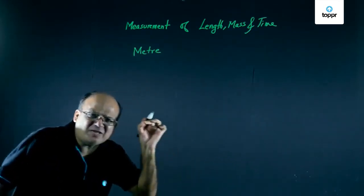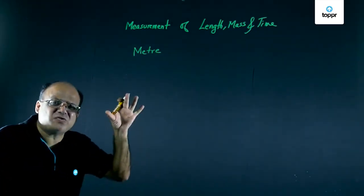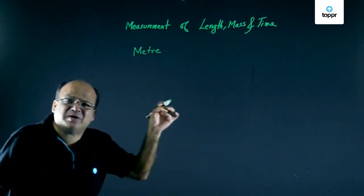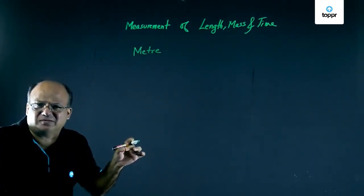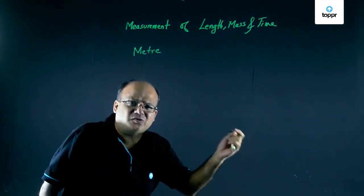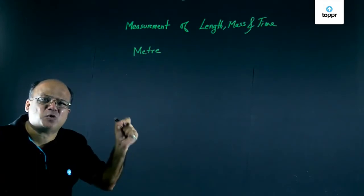How do you measure small things? We can use a vernier caliper. Vernier caliper, we can measure up to 0.1 millimeter. Or we can use a screw gauge. Screw gauge, we can measure up to 0.01 millimeter.